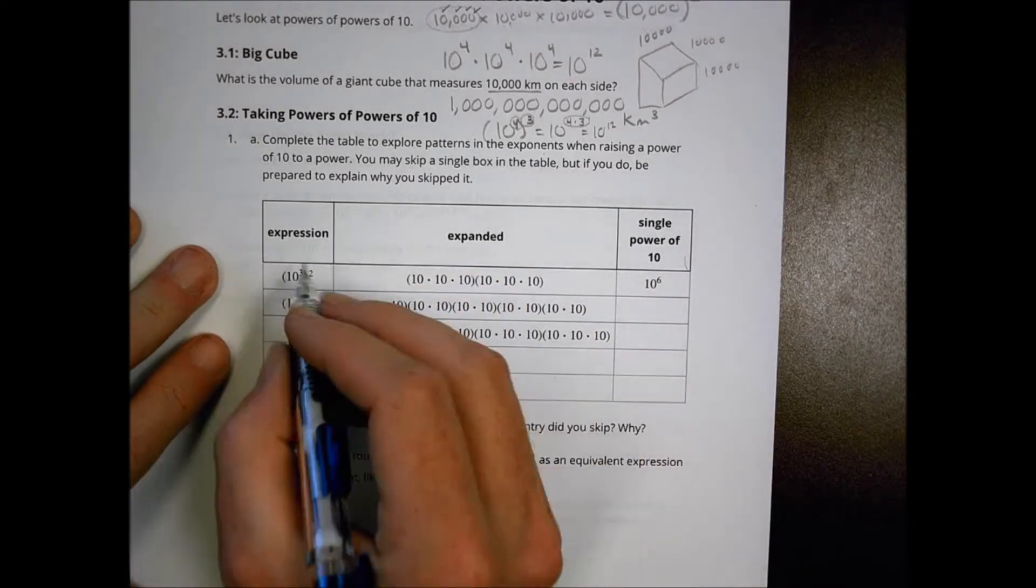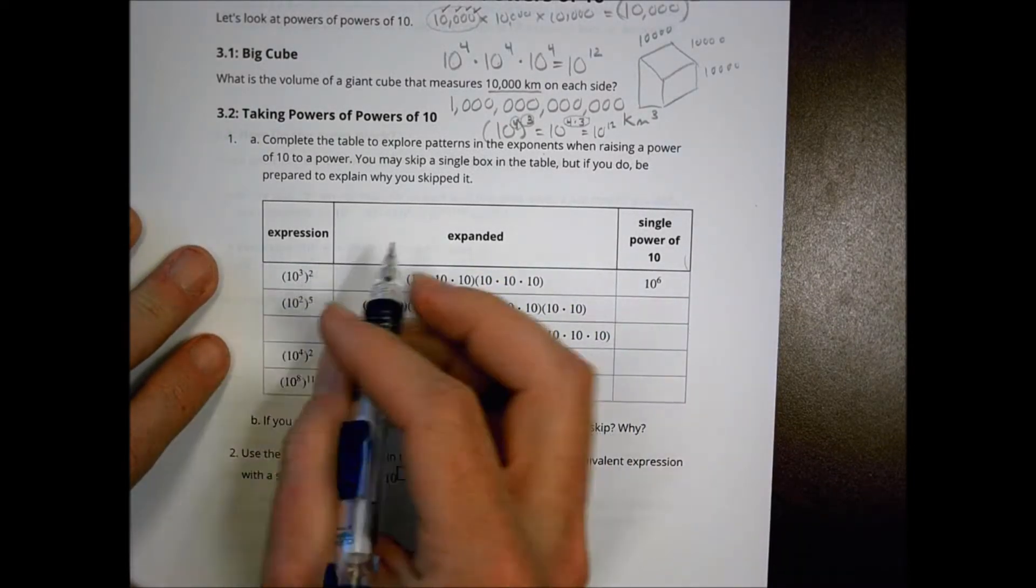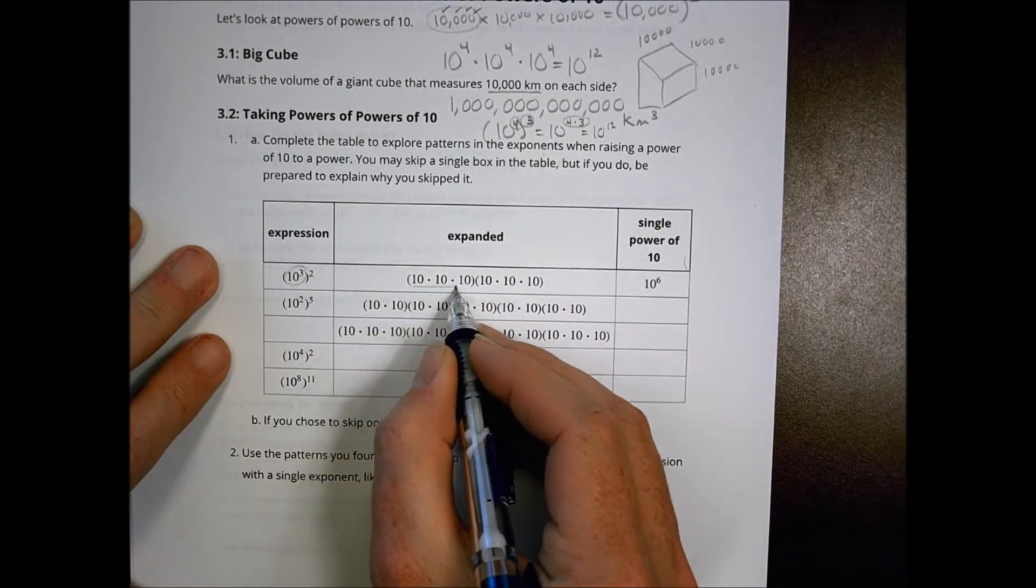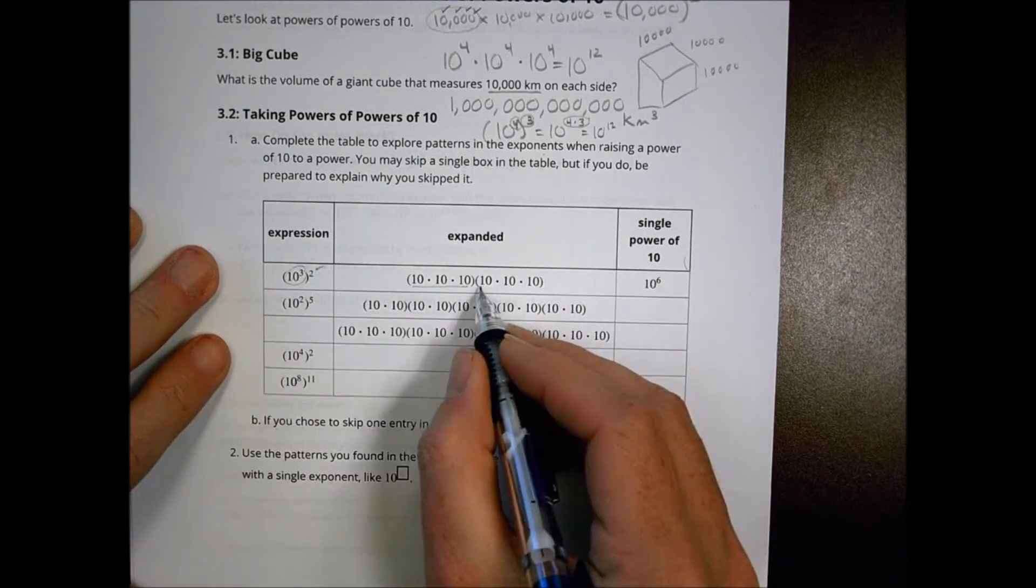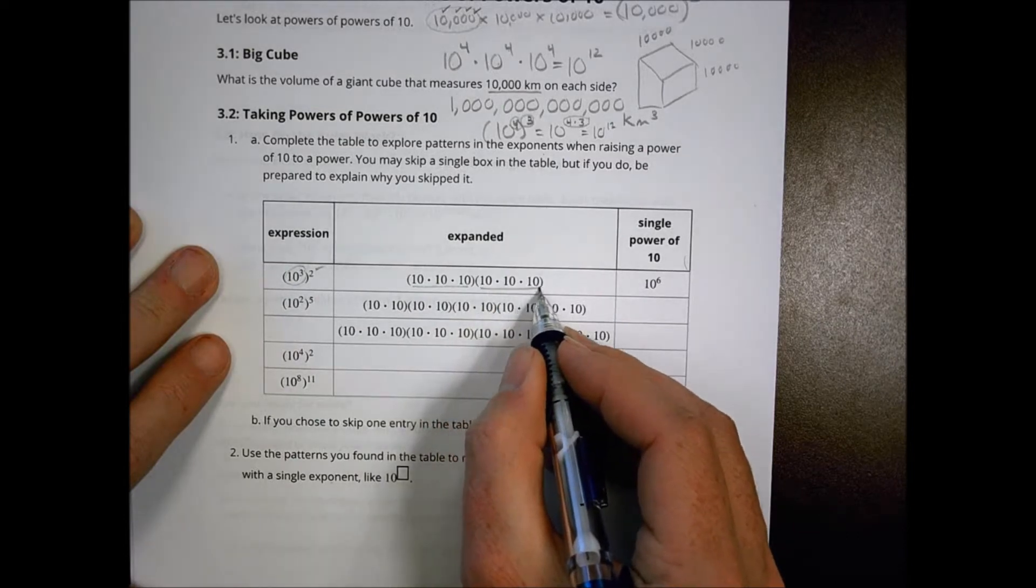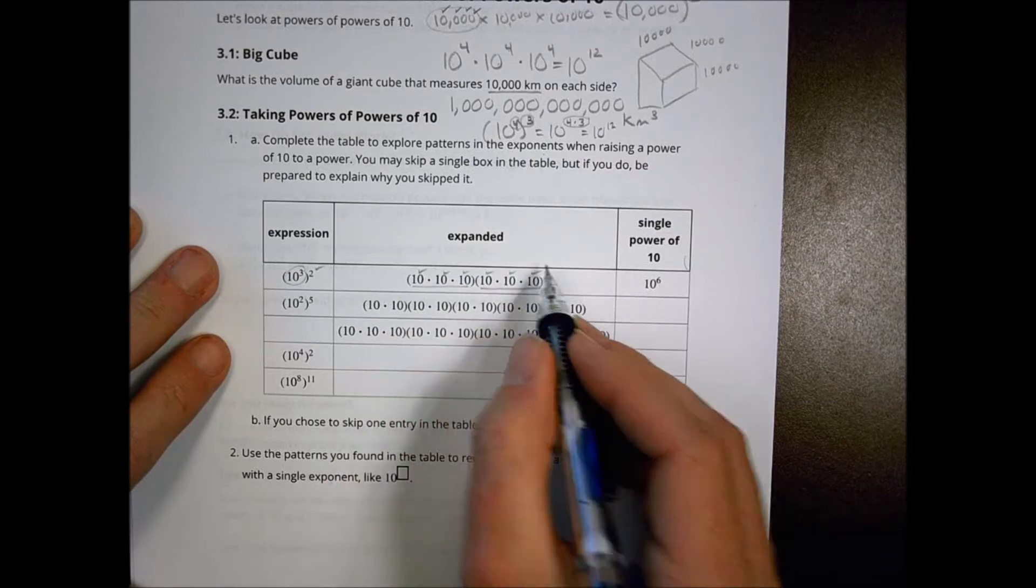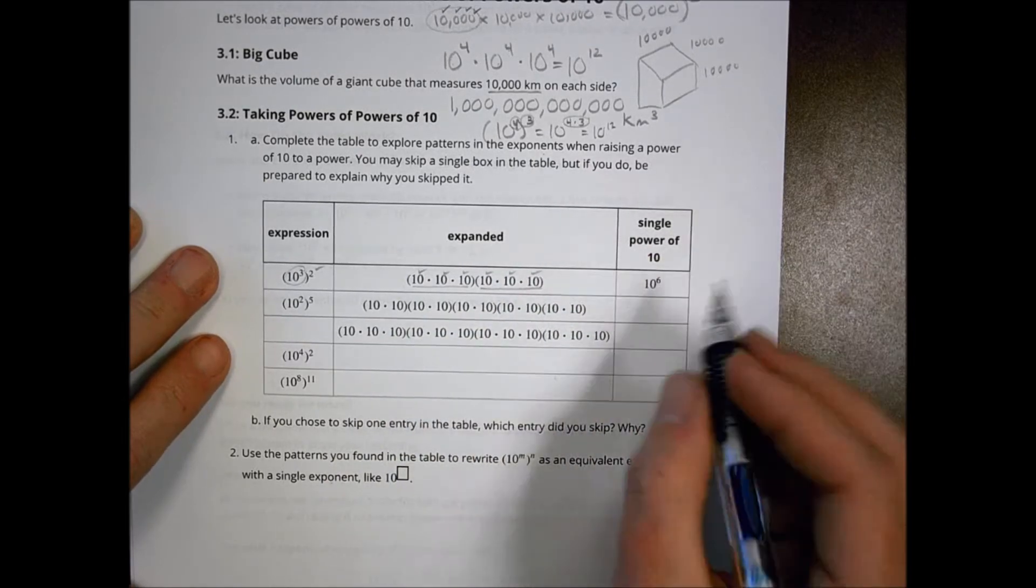Let's take a look at activity number two. First we have 10 to the third squared. We take the 10 to the third and write that down: 10 times 10 times 10. Because we're squaring it, we do it again: 10 times 10 times 10. When I count up all the 10s I have here, I end up with 1, 2, 3, 4, 5, 6. So I end up with 10 to the sixth power.